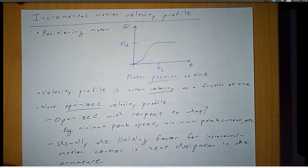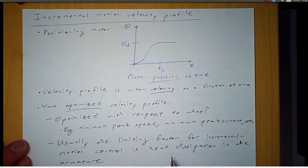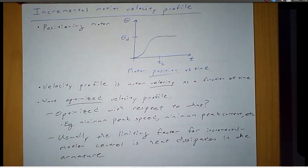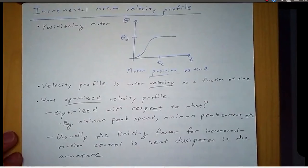Usually for incremental motion control, the limiting factor is heat dissipation in the armature. So what this means is that we are going to find a velocity profile that's optimal with respect to the heat dissipation.